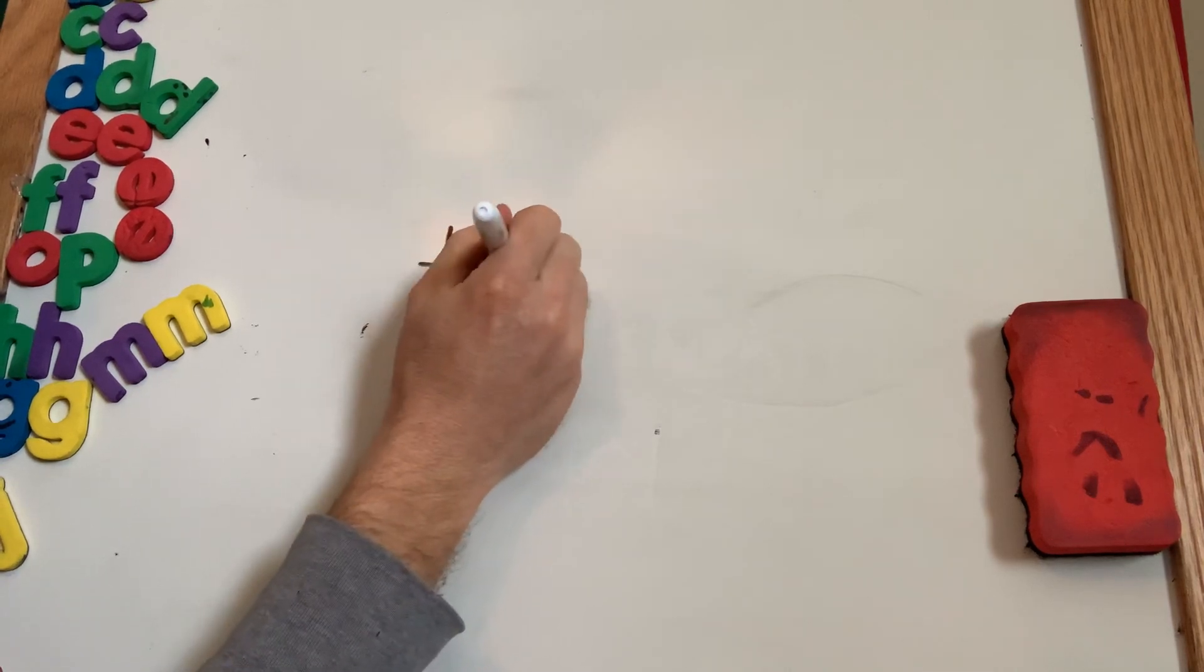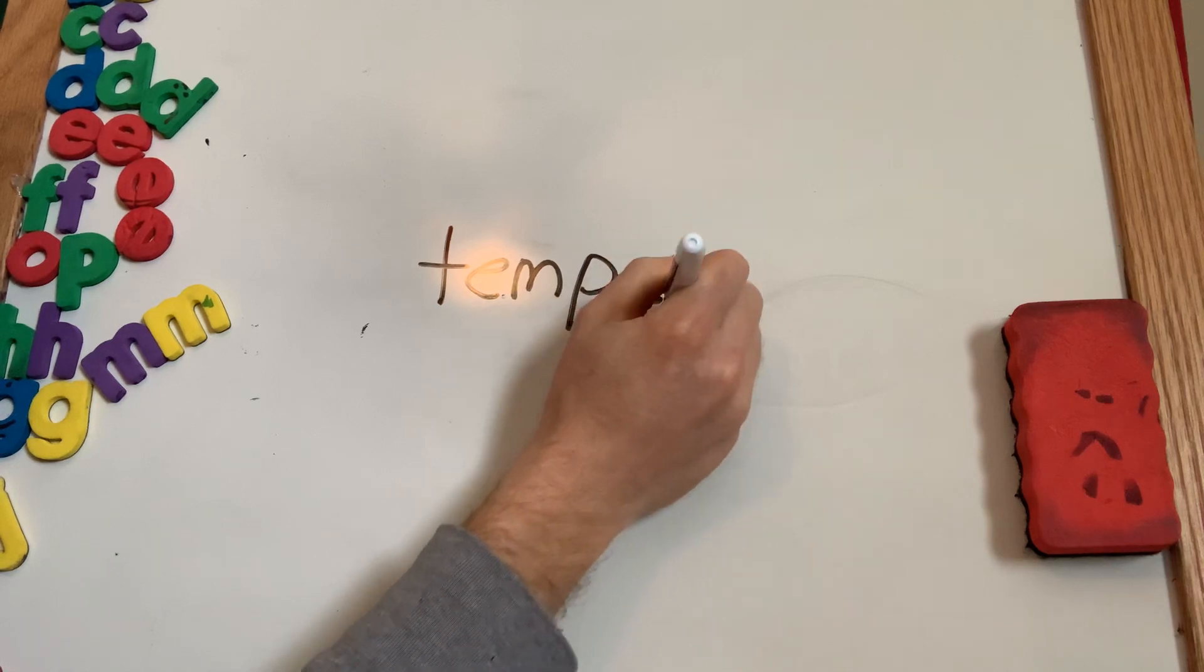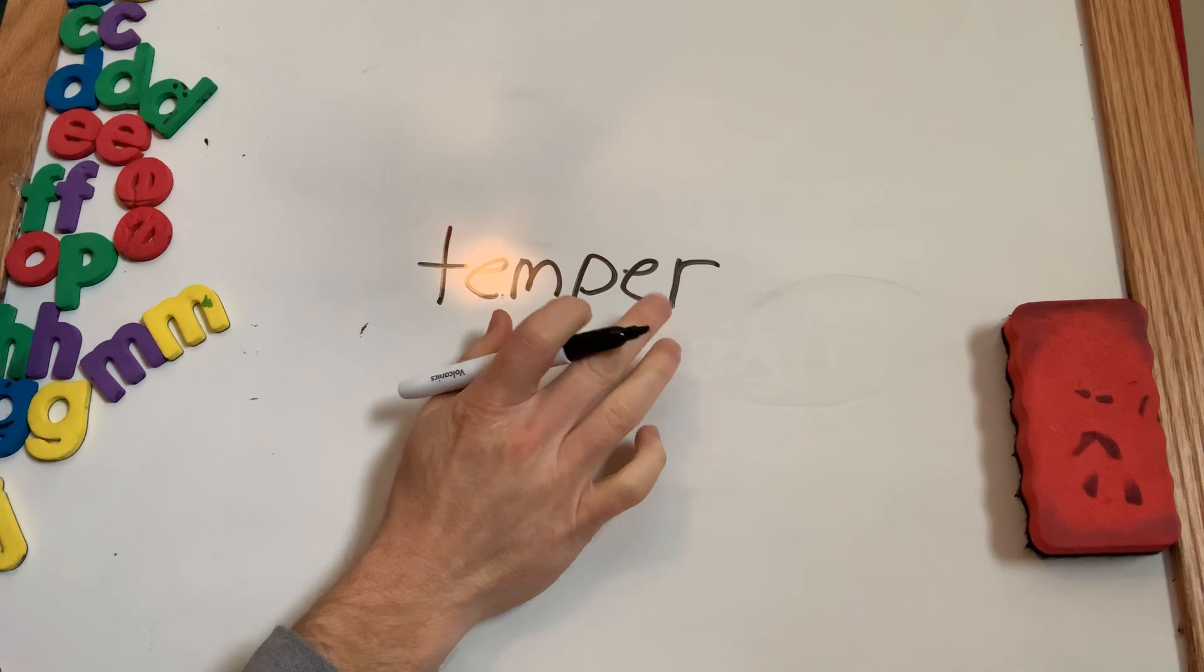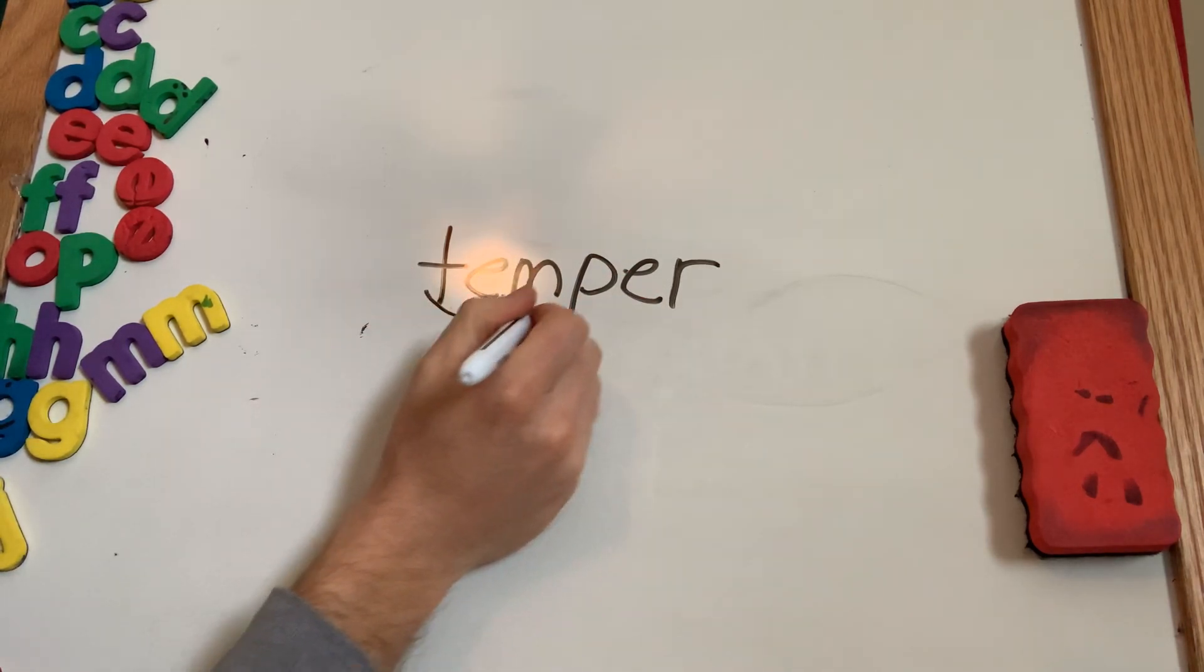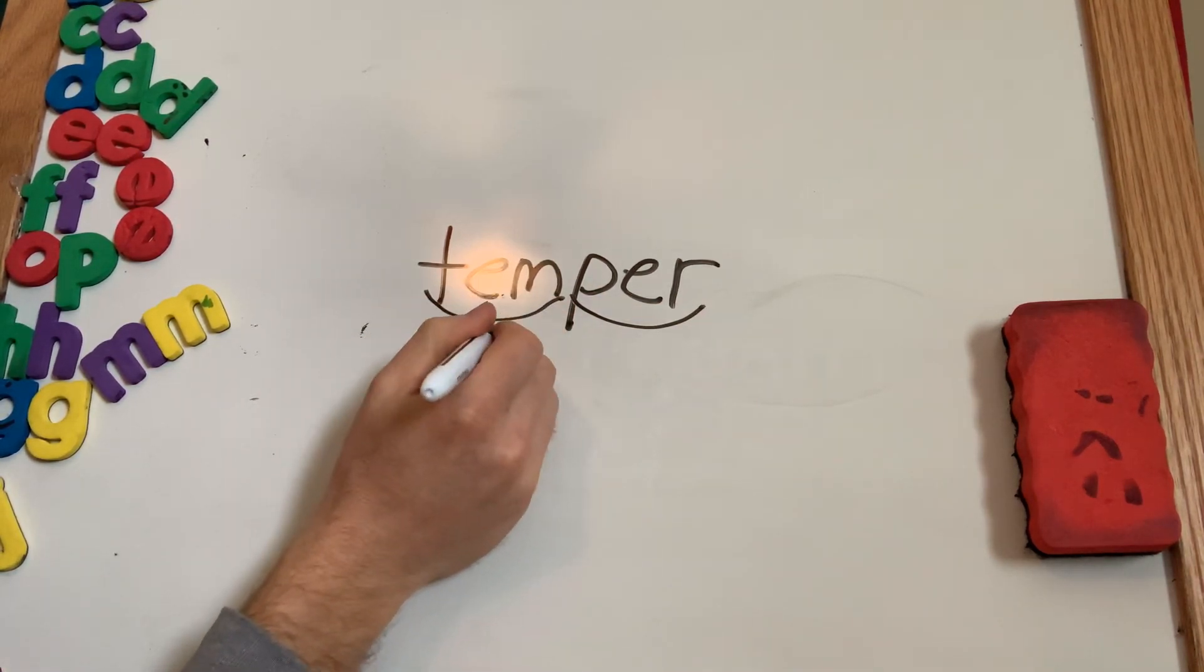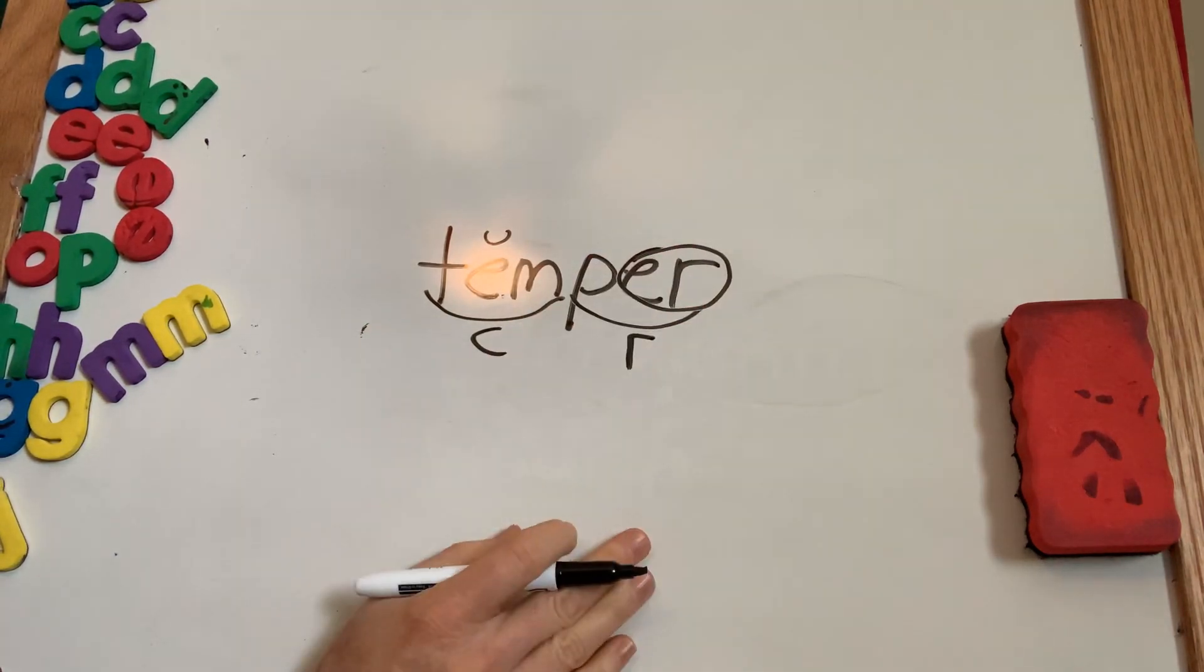Let's do a couple more. Temper. Clap it and tap it. Tem. Per. Pause it and try. T-E-M-P-E-R. Now this one has to be E-R. Why? Because it came at the end. Remember, it's usually E-R if it's at the end. What's my parts? Tem. Per. What type of syllable? That vowel's closed in. Short vowel sound. R-controlled vowel. Very good.